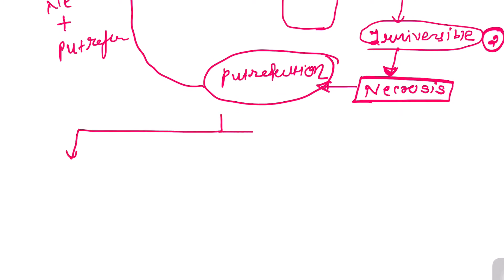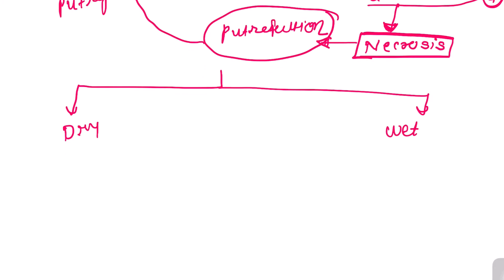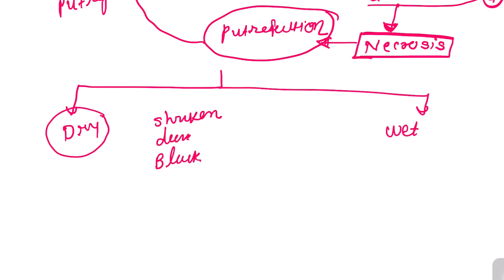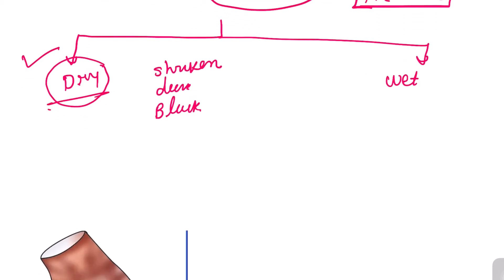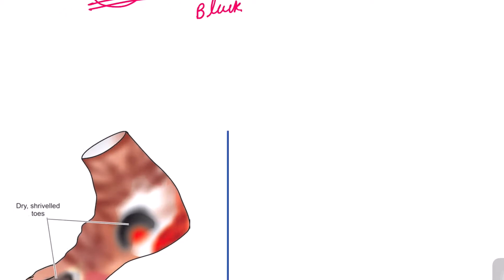The two types are: dry gangrene and wet gangrene. The name itself suggests that in dry gangrene, the organ is shrunken, that organ becomes dark, and that organ becomes black colored.